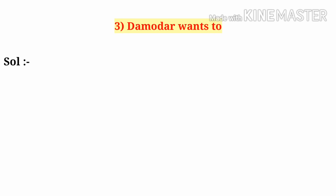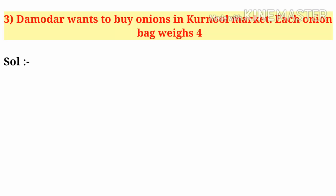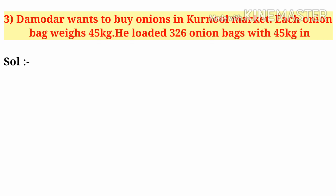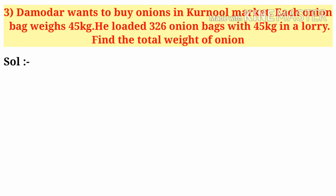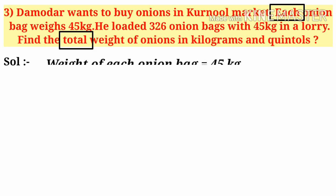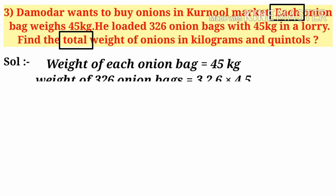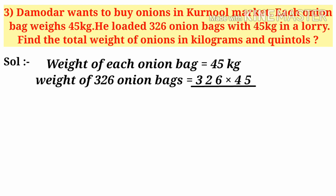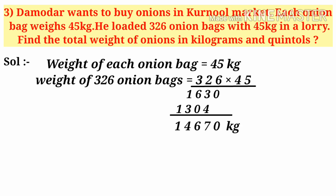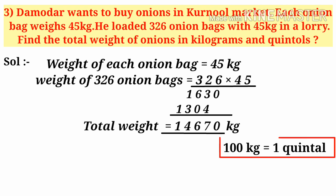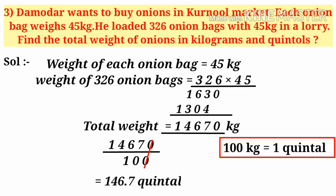Third problem: A mother wants to buy onions in a wholesale market. Each onion bag weighs 45 kilograms. He loaded 326 onion bags with 45 kilograms in a vehicle. Find the total weight of onions in kilograms and quintals. Find the words 'each' and 'total' in the problem, so let us do multiplication. Weight of each onion bag is 45 kilograms. Weight of 326 onion bags = 326 × 45. So 5 × 326 is 1,630, and the total is 14,670 kilograms. We know that 100 kilograms is 1 quintal, so 14,670 ÷ 100 — zeros get cancelled — giving 146.7 quintals.